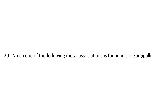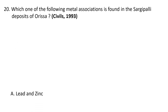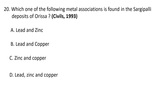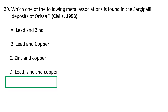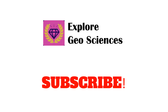Next question: Which metal association is found in the Sargipali deposits of Odisha? A. Lead and zinc, B. Lead and copper, C. Zinc and copper, D. Lead, zinc, and copper. The correct answer is A — lead and zinc are the common metals found in association in the Sargipali deposits of Odisha. Hope you enjoyed the questions — see you in the next video, thank you.